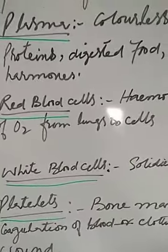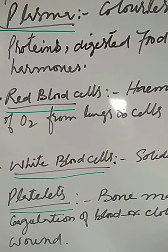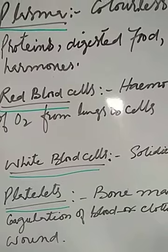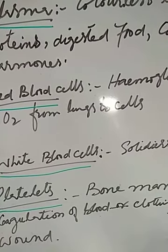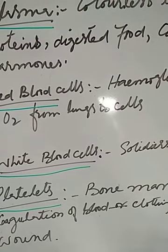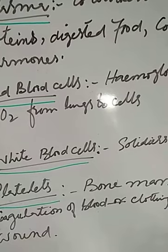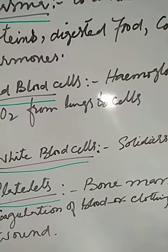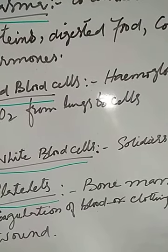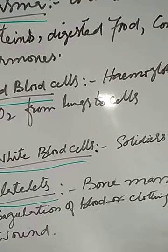Now we will discuss the functions of blood. Blood performs the following functions. Number one, blood carries oxygen from the lungs to different parts of the body. Number two, blood carries carbon dioxide from the body cells to the lungs for exhaling or breathing out. Number three, blood carries digested food from the small intestine to all parts of the body.